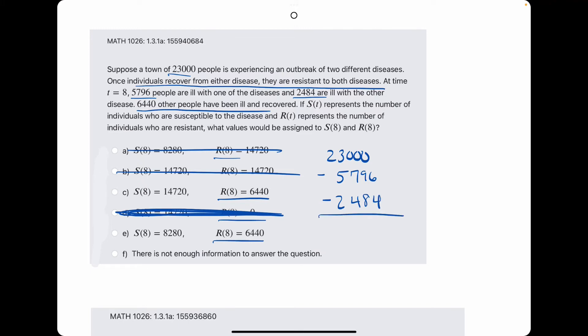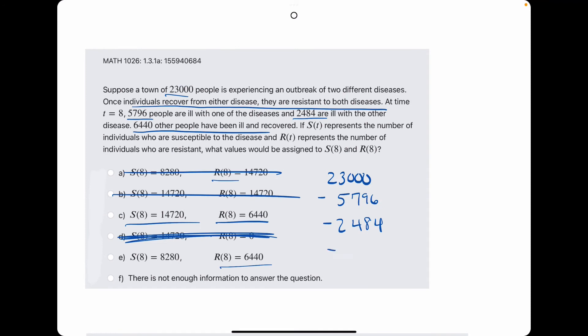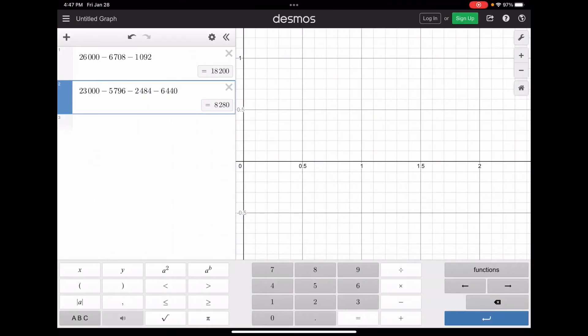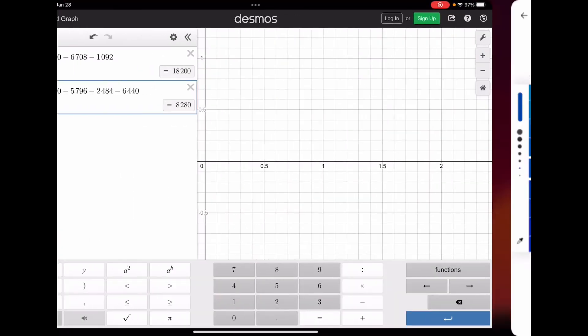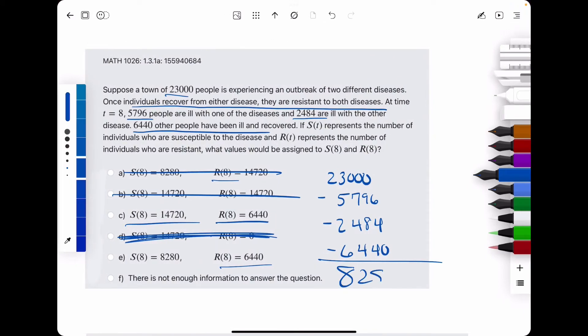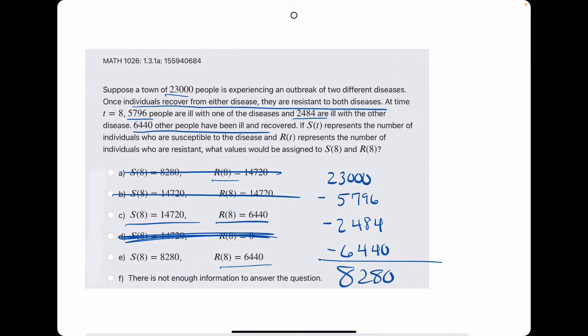And we also want to subtract the 6,440 because that is the number of people who have been ill and recovered. So, they are no longer susceptible to getting the disease again since they've already had it and recovered. So, we have 23,000 minus all these values and calculating it here, we get 8,280 or 8,280. So, we eliminate option C and it looks like E is our best answer. Let's break out the eraser and we see that E is in fact our answer.